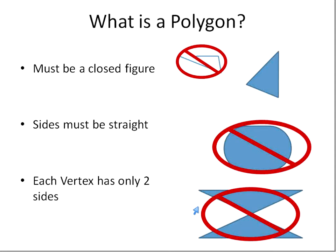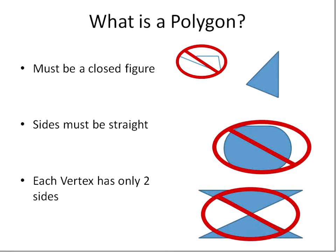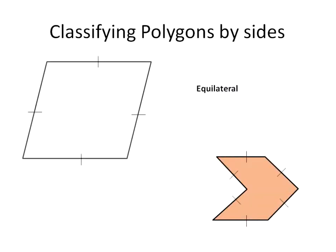Hopefully you were able to identify that these three shapes are not polygons. This one here is not a closed figure — it has an opening in it, therefore it's not a polygon. This one has curved edges. And this one here has a crossover where one vertex would have four line segments coming into it. The fourth shape, however, is a polygon — it's a triangle, with three vertices joined by three straight sides.